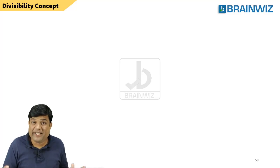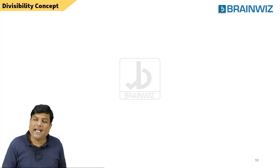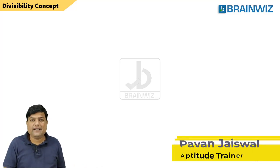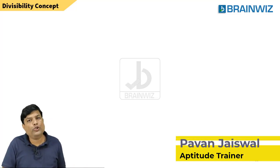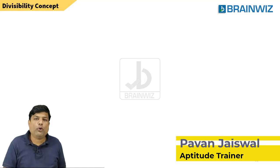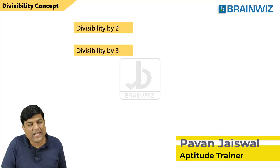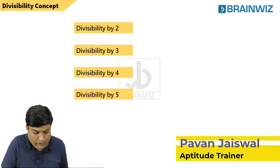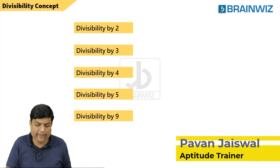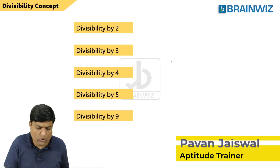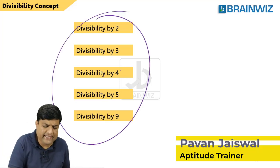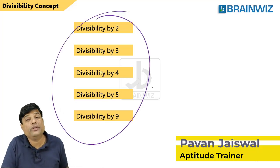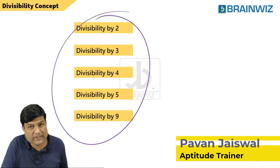Let's try to learn the Divisibility Concept — what happens in this and how to do it. Basically, you all know divisibility of 2, 3, 4, 5, and 9. All these things are quite easy, which you have learned at your school level.